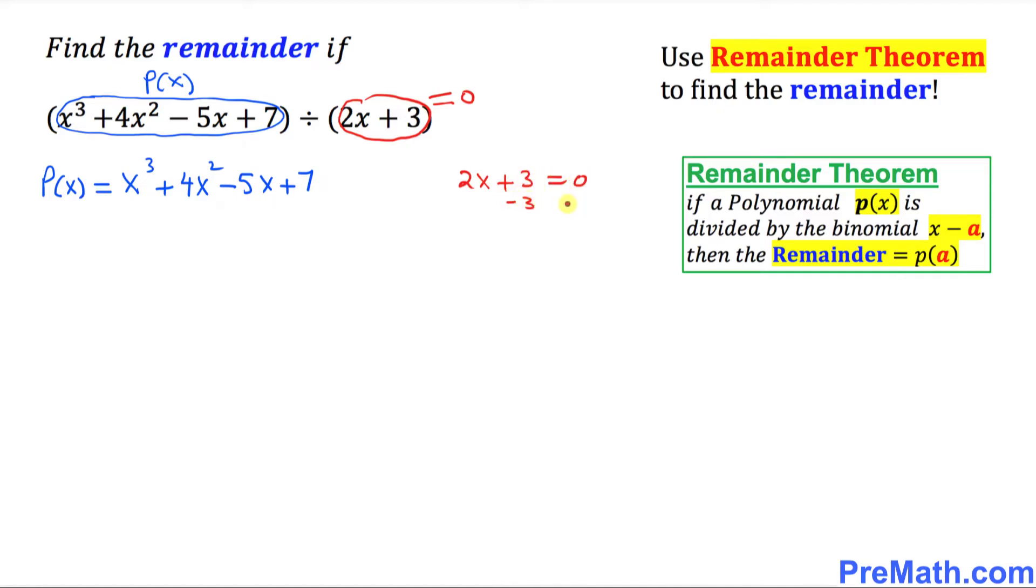Let's solve for x. Subtract 3 from both sides. So 2x equals negative 3. Divide both sides by 2. So x turns out to be negative 3 over 2.